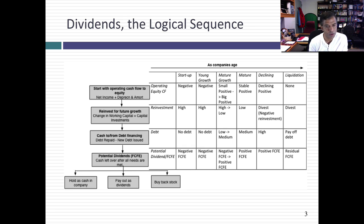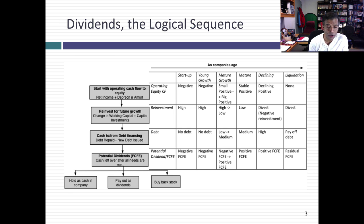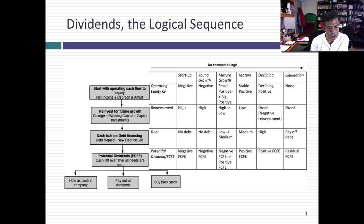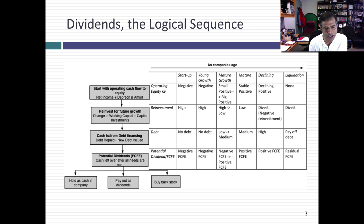As a mature company, you enter the golden age of cash return. The earnings come in, you don't have much in reinvestment needs, and you can return a lot of cash to your stockholders. But even mature companies, at some point, are going to decline. When you go into decline, you tend to still continue to make money, even though that money might be shrinking. Rather than reinvest, you're actually divesting businesses — getting cash inflows from that second step. And you might have to pay off debt, but you can still return a lot of cash, partially liquidating yourself over time as you get smaller.